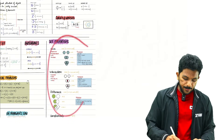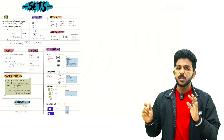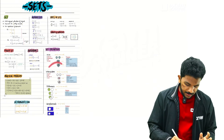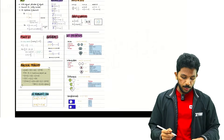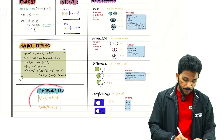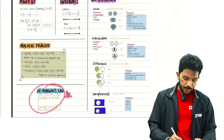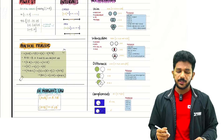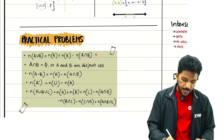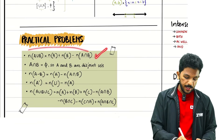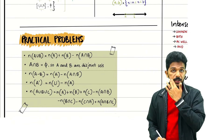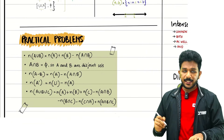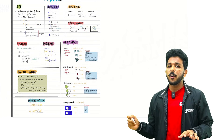Set operations are important: union, intersection, difference, and complement. That's important. There is a question about what this formula is — this formula is important. Practical problems are covered in this first chapter.